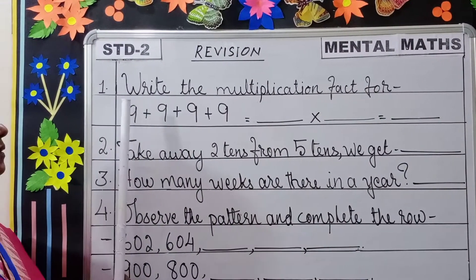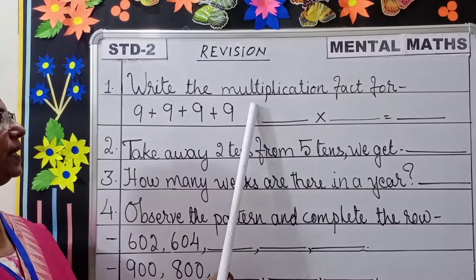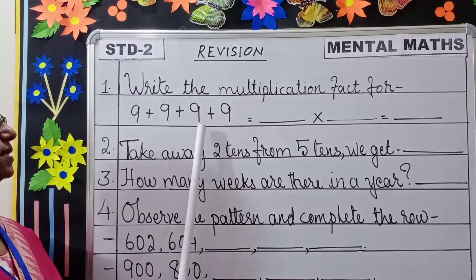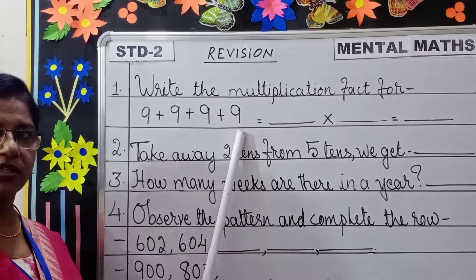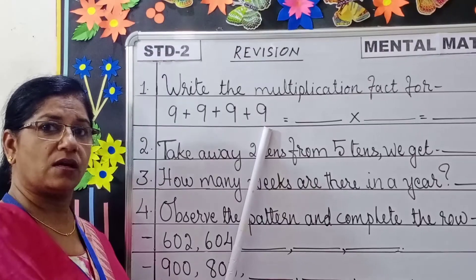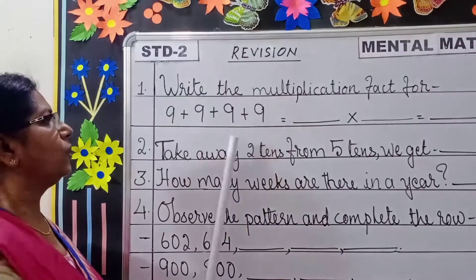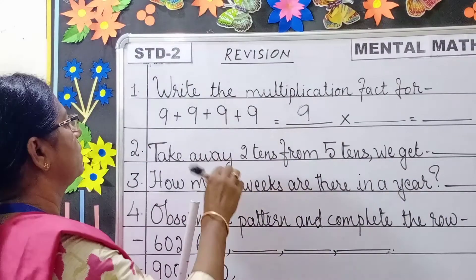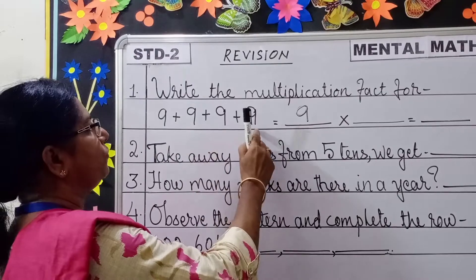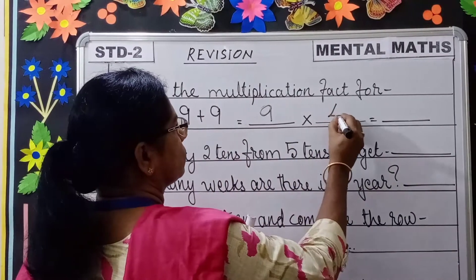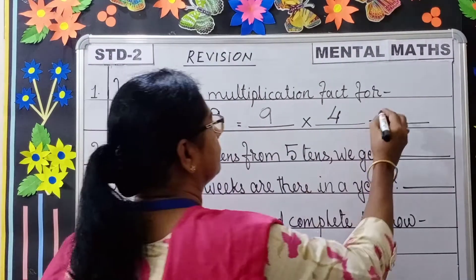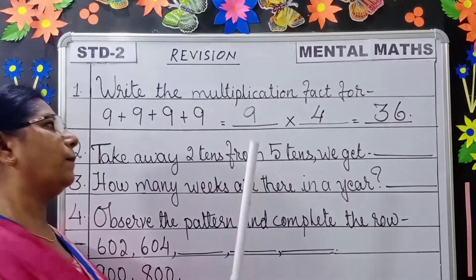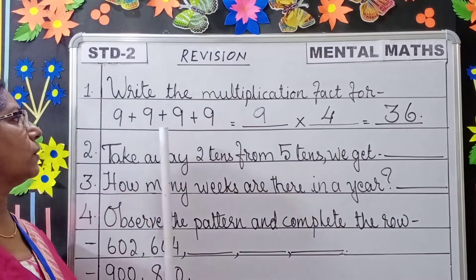Question number 1: Write the multiplication fact for 9 plus 9 plus 9 plus 9. You know children, multiplication is repeated addition. So 9 here repeats 1, 2, 3, 4 times. So 9 fours are 36. This is the multiplication fact for the given number.